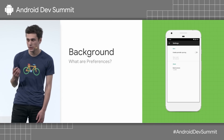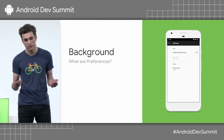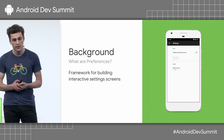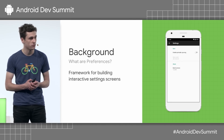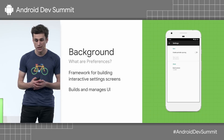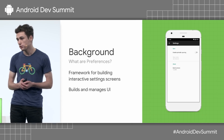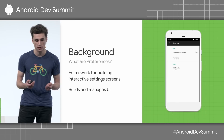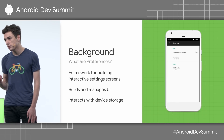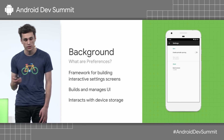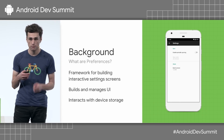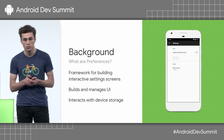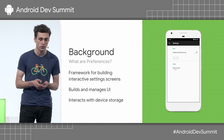But first, some background. What are preferences? The preference library is a framework for building interactive settings screens. It handles building and updating the UI, so all you need to do is define a list of settings to be displayed to the user. And it also handles interacting with device storage so that any value that the user changes will ultimately get persisted to the device without you having to worry about it.